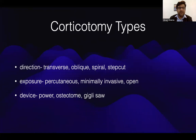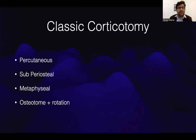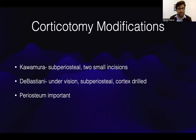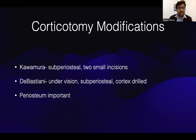Coming to corticotomy types — by direction it may be transverse, oblique, spiral, or step cut. Exposure-wise it may be percutaneous as minimally invasive, or open. According to the device used, a power saw, osteotome, or jigsaw may be used. The classical corticotomy is described as a percutaneous subperiosteal metaphyseal osteotomy done with an osteotome. Corticotomy modifications include a subperiosteal corticotomy with two small incisions, or a subperiosteal corticotomy done under vision in which the cortex is drilled. An important point to understand is that the periosteum is very important; hence all corticotomies have to be subperiosteal.